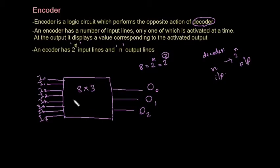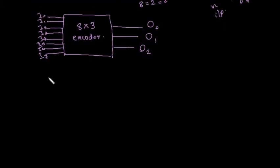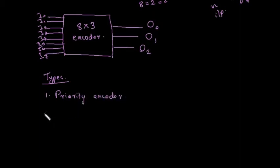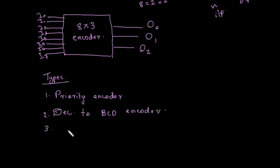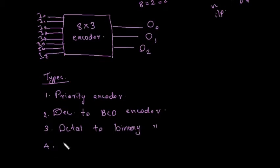The basic types of encoders are: first, priority encoder; second, decimal to BCD encoder; third, octal to binary encoder; and fourth, hexadecimal to binary encoder.